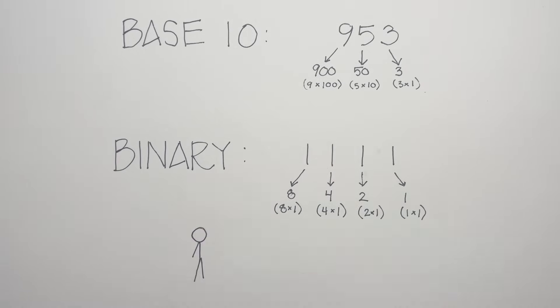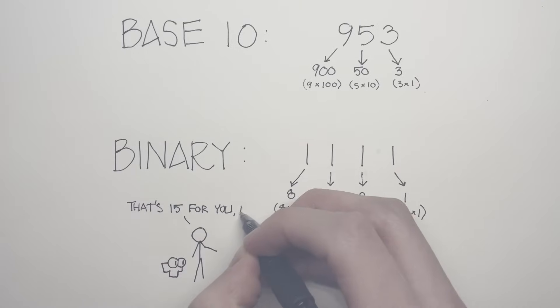So when we see this number 15 on screen, if we wanted to represent that in binary, we would write it as 1111, which means 8 plus 4 plus 2 plus 1, in the same way that our 15 means 10 plus 5.